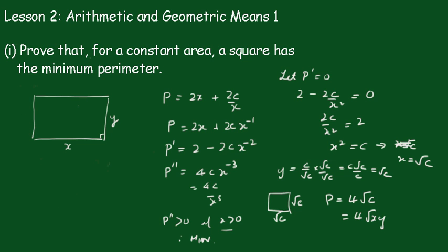Now we know the perimeter of the rectangle must be greater than the perimeter of the square because we just proved that. So the perimeter of the rectangle is 2x plus 2y and that must be greater than 4 root xy.